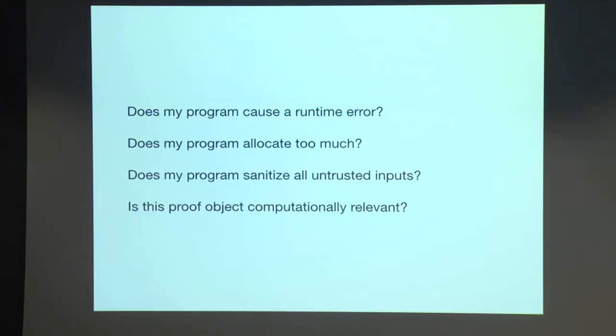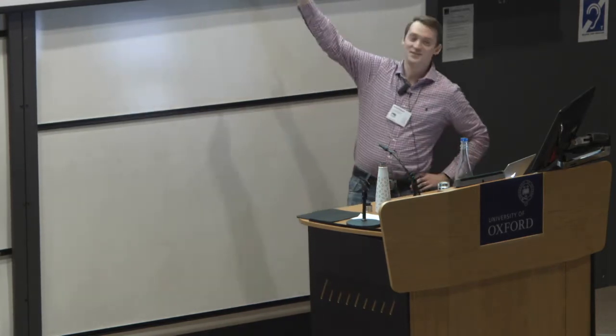I'd like to start by asking if you've ever written a program and asked yourself one of these questions about your program. Does my program cause a runtime error? Does my program allocate too much? Does my program sanitize all of its untrusted inputs? Is this proof object computationally relevant? I threw that in for the dependently typed people because you think I don't need a program analyzer, but you can use one.